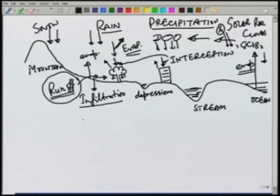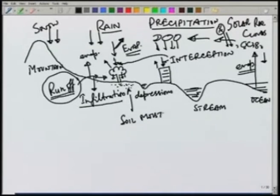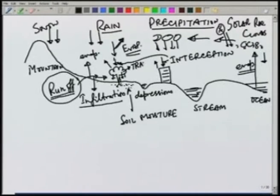The part which goes into the ground as infiltration — some part of it may be retained near the soil surface and is called the soil moisture. Part of this moisture will be taken up by the plants through their roots and then it will be transpired back to the atmosphere. We call it transpiration. There will be some water under the ground.